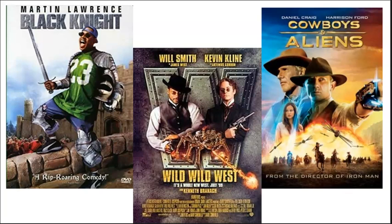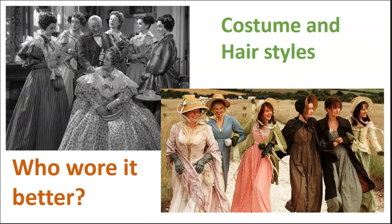Sometimes anachronism is purposeful, such as in comedy or science fiction. Most anachronism in film and literature, though, is accidental, lazy, or reflective of the time when the film or book was produced rather than the era in which the story takes place. Whether or not this bothers you can be a matter of personal interest and expertise. Some might not notice errors in costume and hair, but they leap off the screen at me. The 1940 version of Pride and Prejudice on the left is a travesty to historical fashionistas like myself, whereas the 1995 miniseries is perfection.